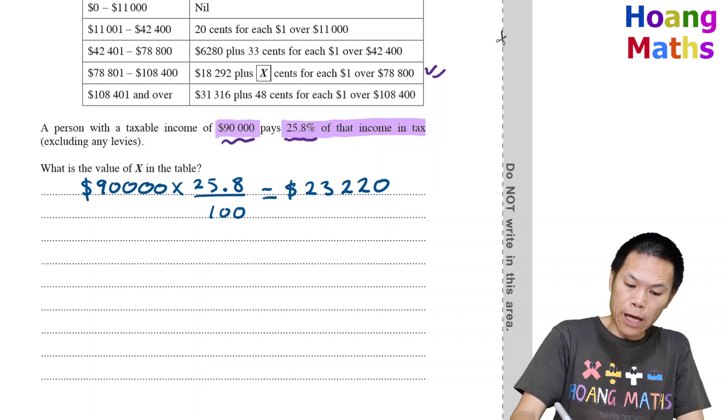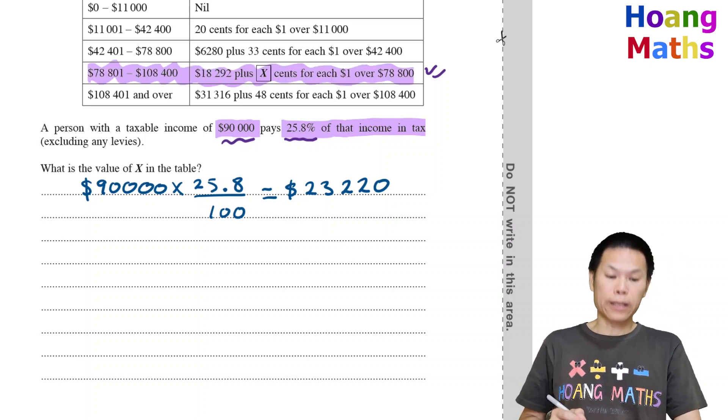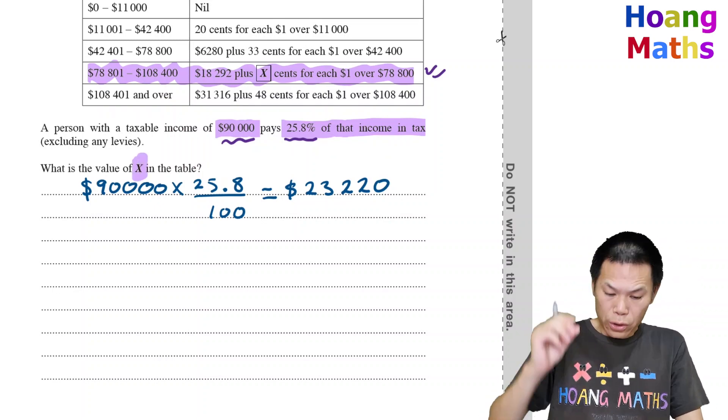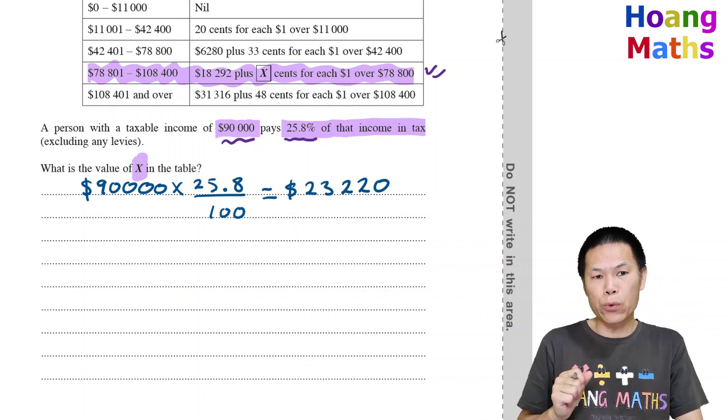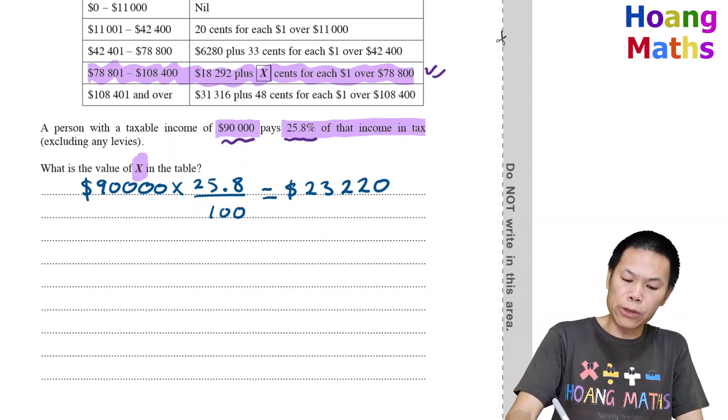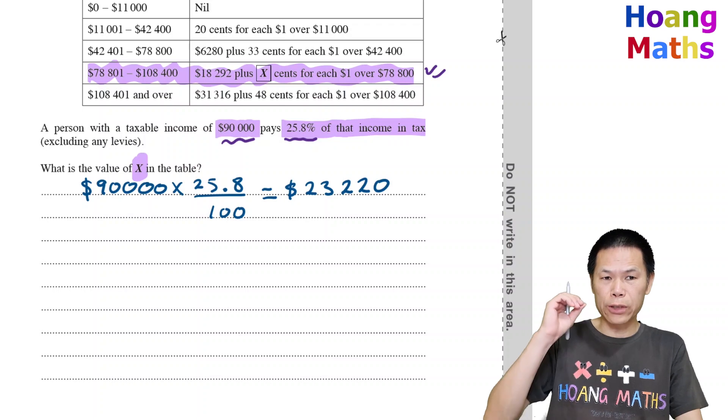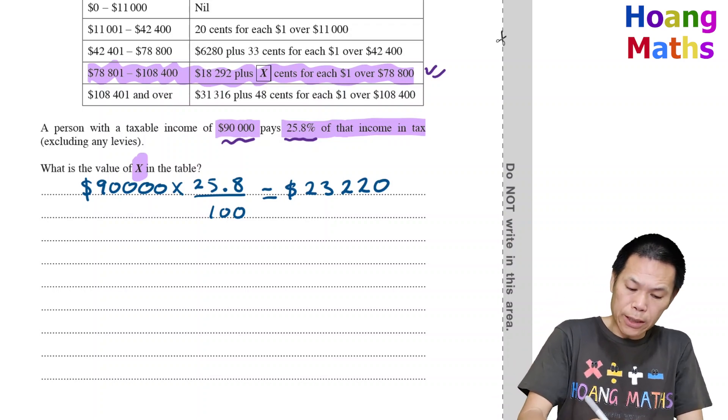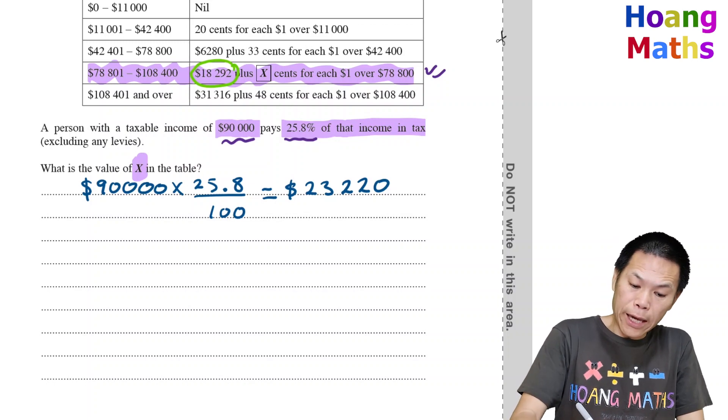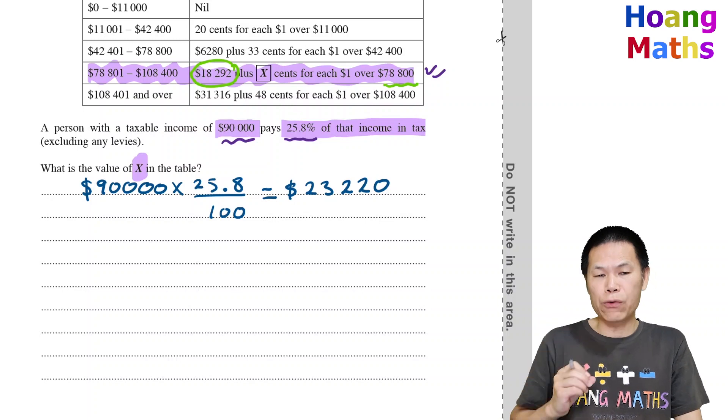If we look at this table here, we need to work out the value of X. The tax table says we need to pay this amount of tax plus X cents for each dollar over $78,800.